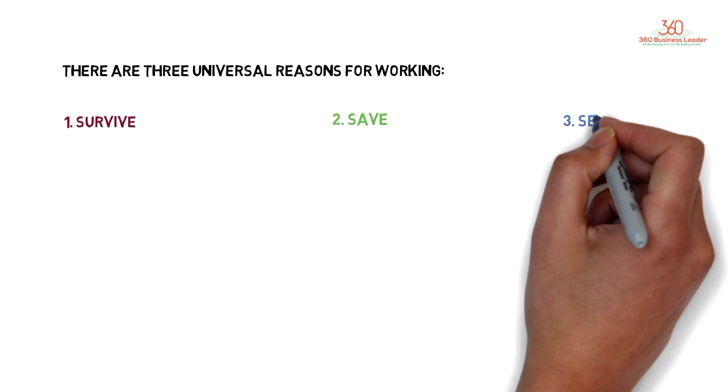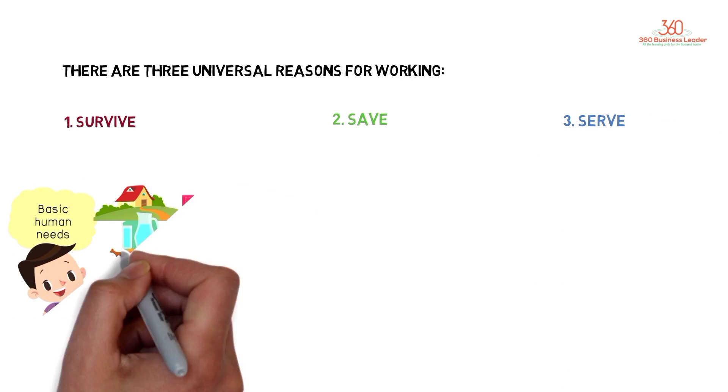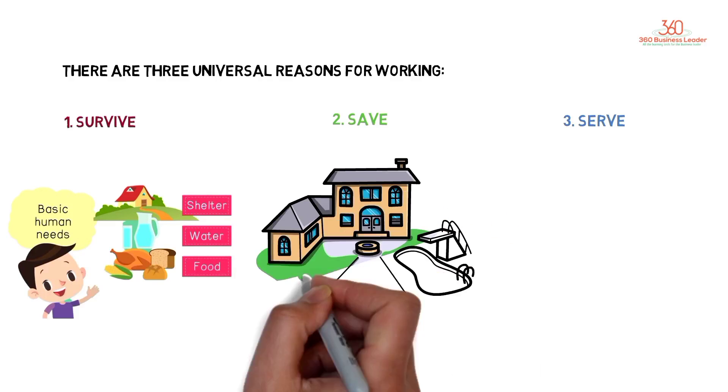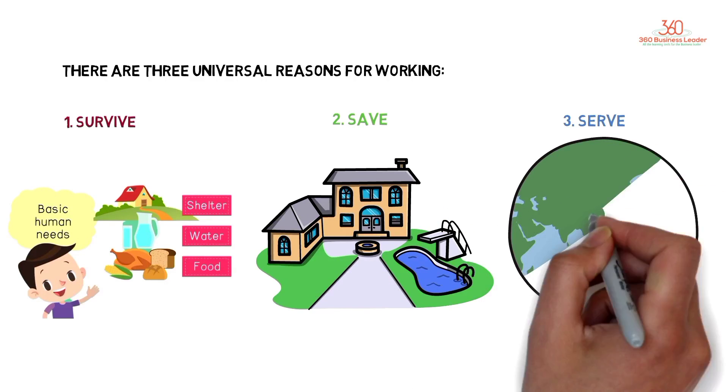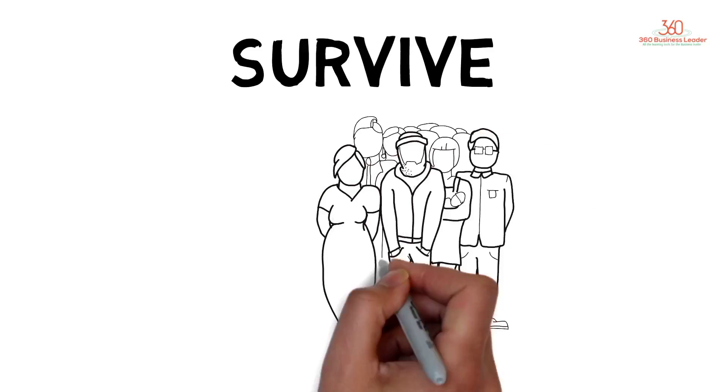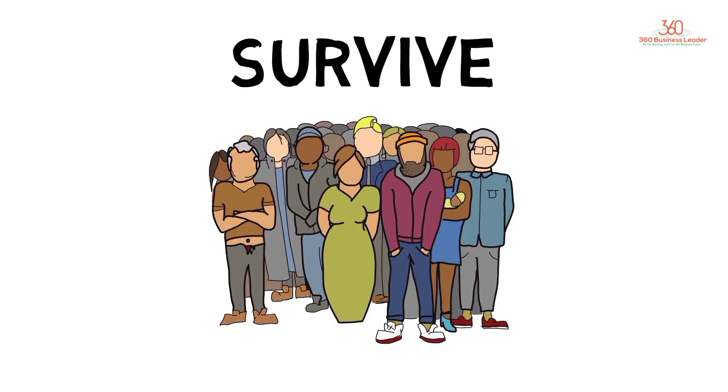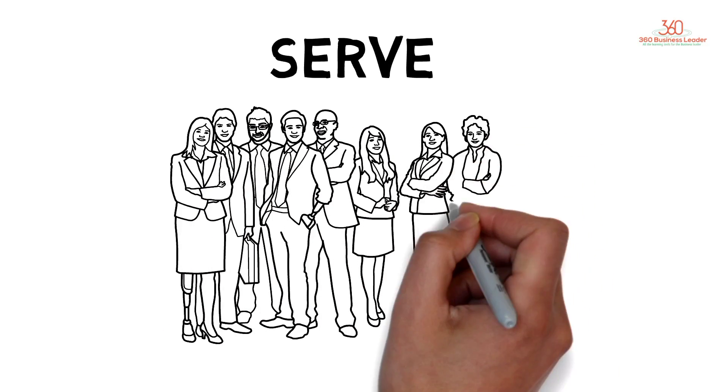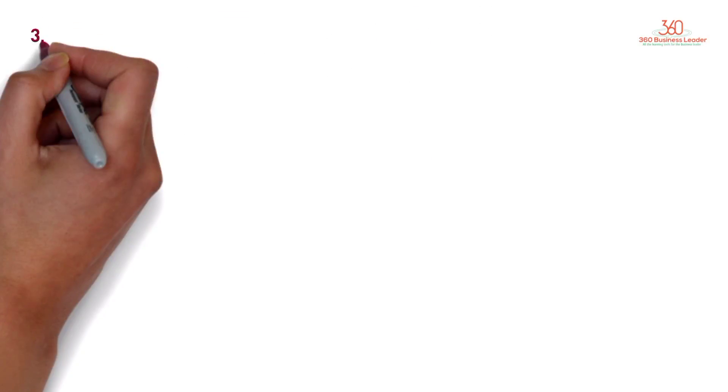What you focus on is what you get. There are three universal reasons for working: survive, save, and serve. Survive - meet your basic living needs. Save - go beyond your basics and expand your life. Serve - make a contribution to the world. Most people focus on the first, survive, their entire lives. But the truly successful people in all aspects of their lives focus on the third: serve.